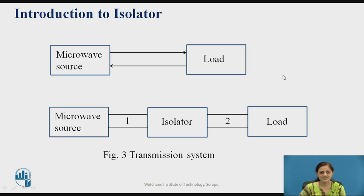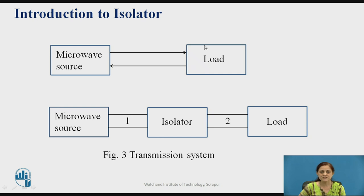Now consider the block diagram for a transmission system. In several microwave generator circuits, there will be frequency and amplitude variations at the generator due to reflections from the load side towards the generator side. This reflection happens only when there is impedance mismatching from the load to the generator side. Due to impedance mismatching at the load, some part of the signal reflects back from the load towards the microwave source, making the system unstable.